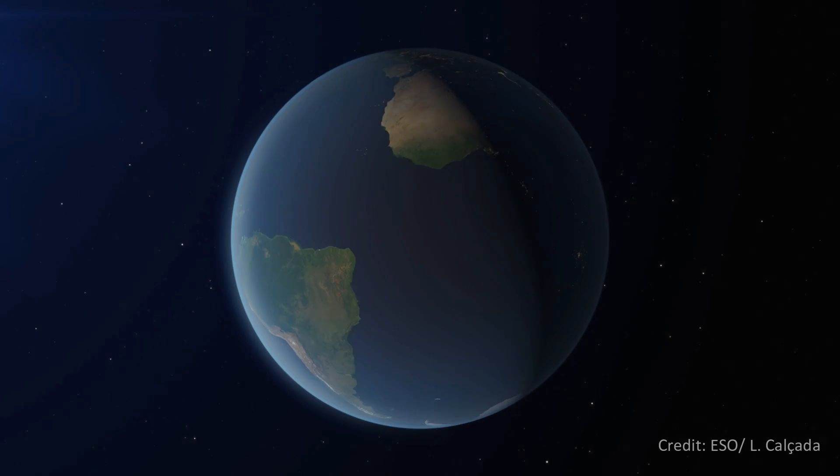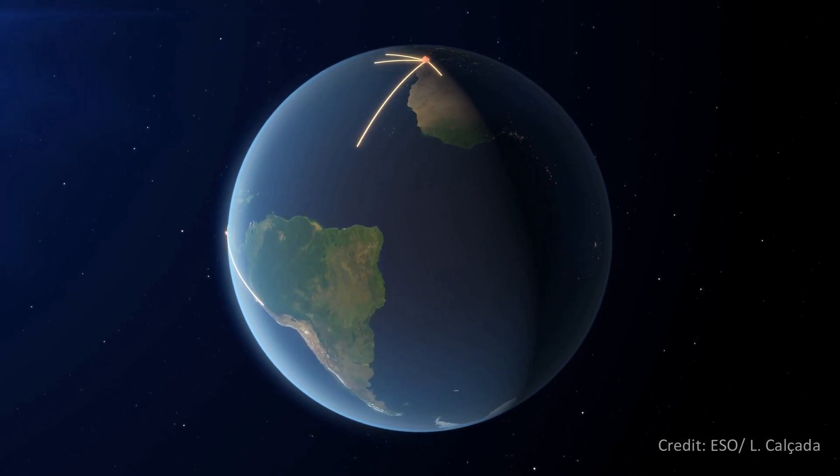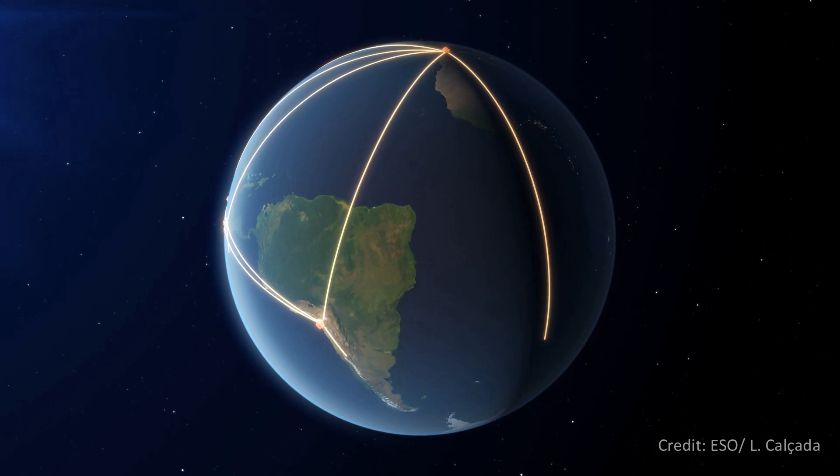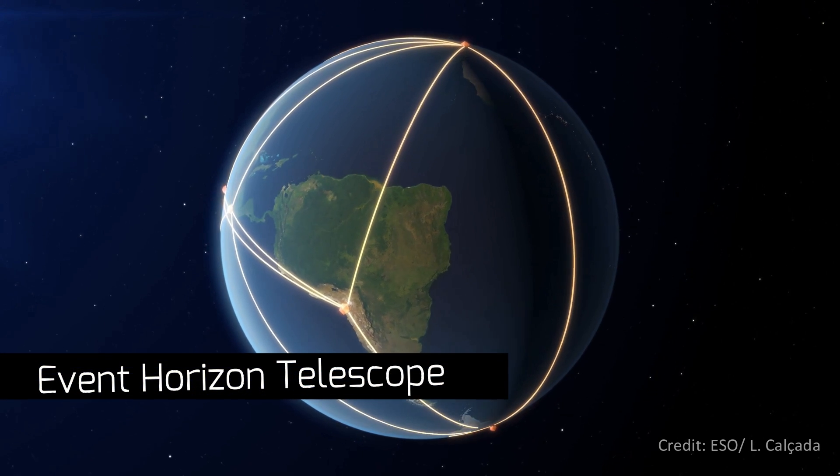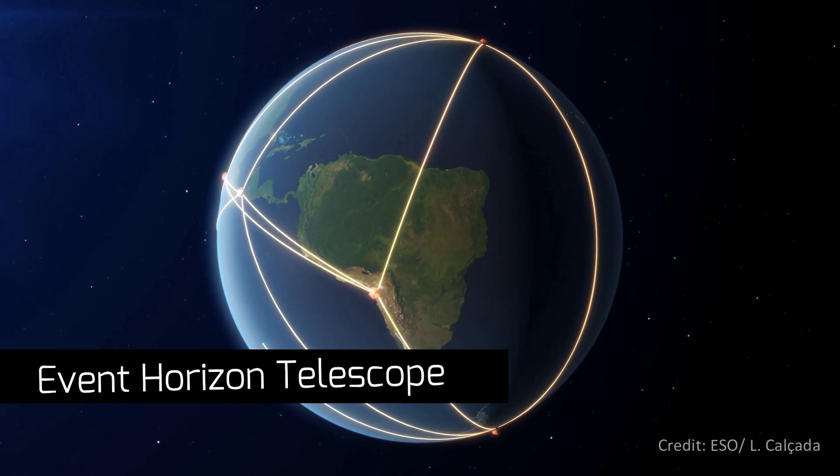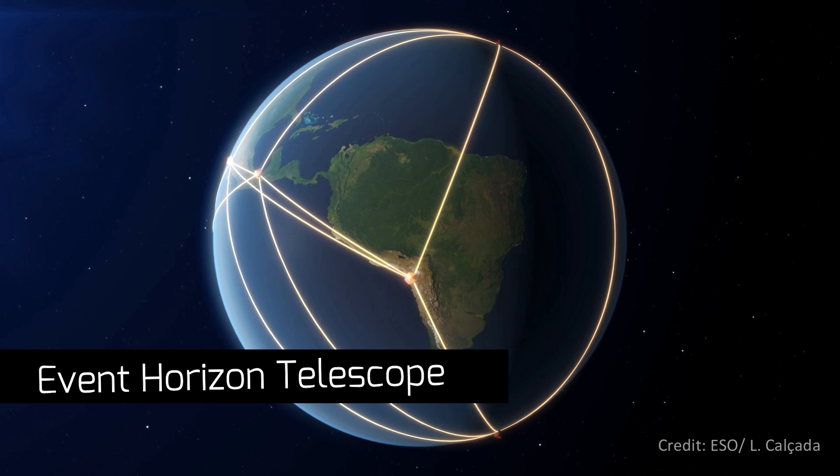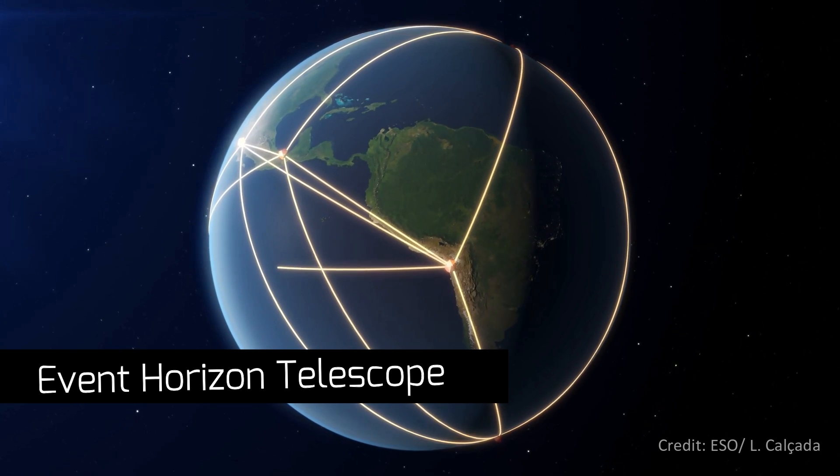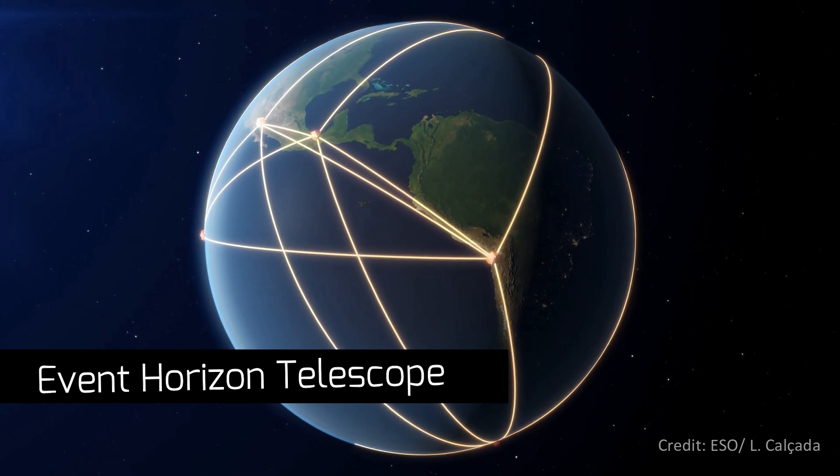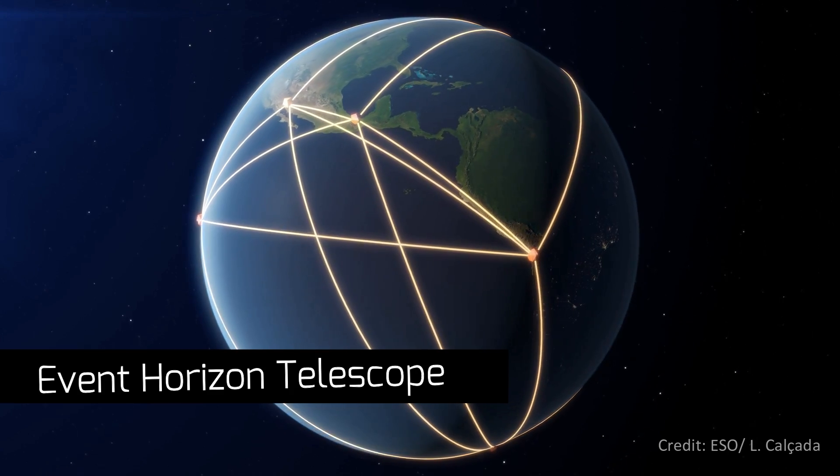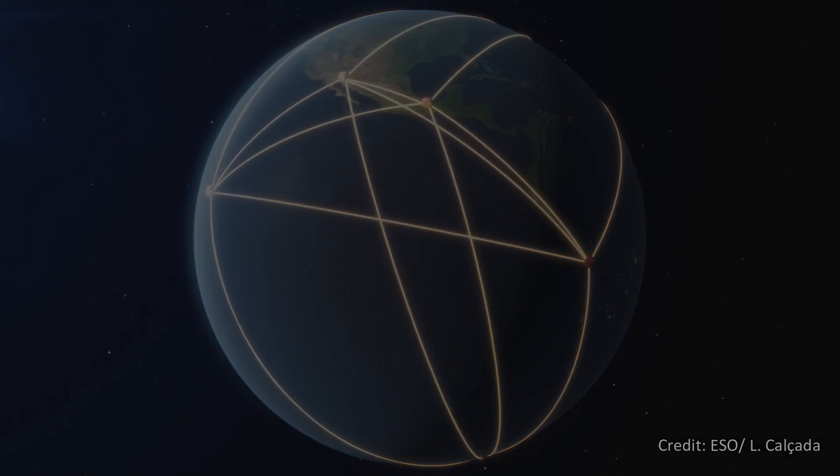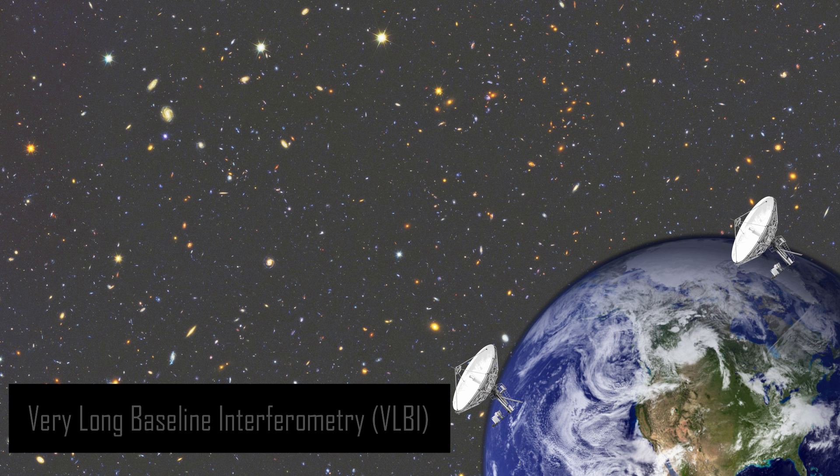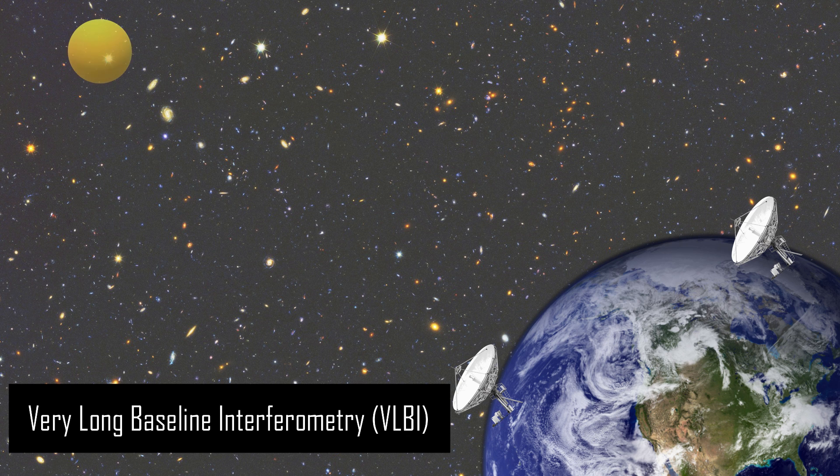So how did they make it happen? This was achieved by an international network of ground-based radio telescopes which consisted of eight different telescopes around the globe, known as Event Horizon Collaboration, all operating together as if it were one telescope the size of the entire Earth. This method is known as very long baseline interferometry.